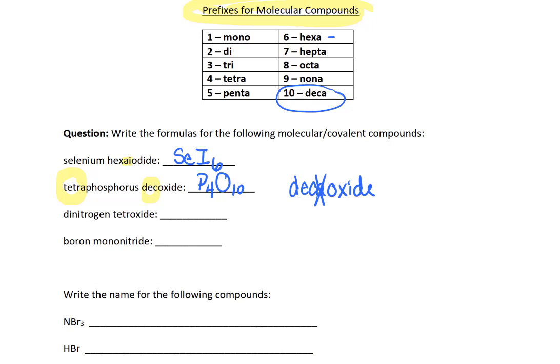This one's dinitrogen tetraoxide. Nitrogen is N. Di means you have 2 of them. Oxide is O, and tetra means you have 4 of them. Notice how it doesn't say tetraoxide because, again, this is another example where we have an A-O combination.